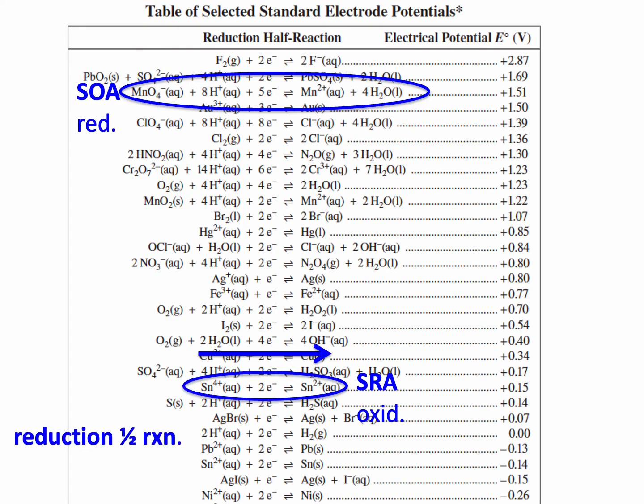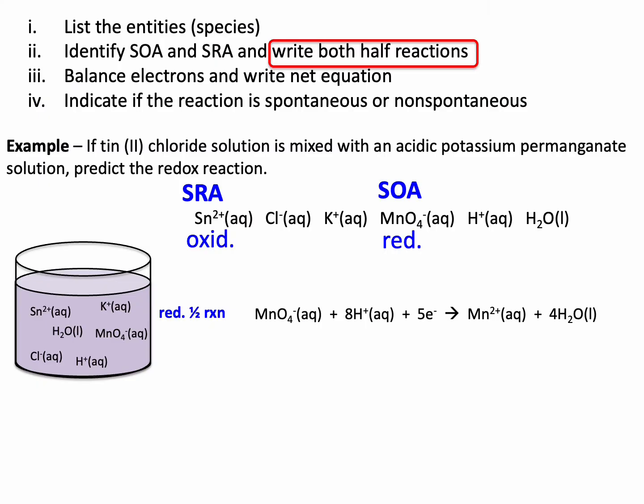Now for the strongest reducing agent, we have to realize that right now, the way it's written in the data book is a reduction equation. But my strongest reducing agent is oxidized. So I have to write an oxidation equation, which means I have to flip it. I have to flip that reaction to make it oxidation. Back to here, that's what I see in the data book, but I have to flip that.